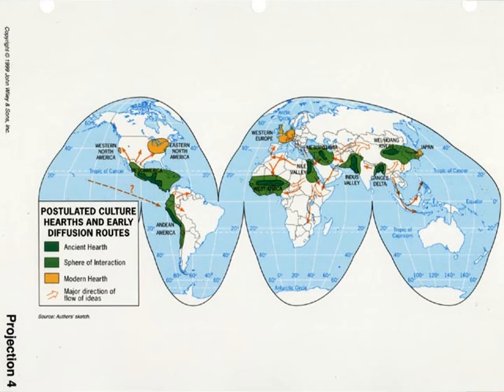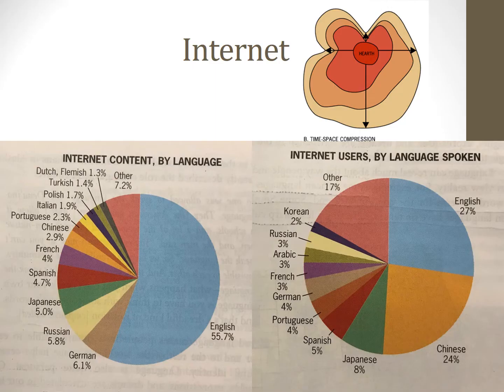Modern communication technology has encouraged and facilitated the globalization of popular culture. And we cannot talk about globalization and diffusion of popular culture without talking about the internet. Social media and the internet help to facilitate the diffusion of culture. Platforms like Facebook, Twitter, Instagram, and TikTok allow for cultural traits to diffuse almost instantly across very large distances.